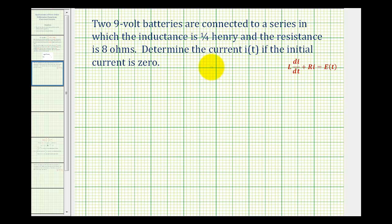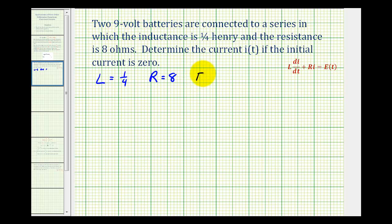From this problem, we need to recognize that L is one-fourth Henry, so L is equal to one-fourth. The resistance is eight ohms, so R is equal to eight. And because we have two nine-volt batteries, two times nine volts is eighteen volts, so e of t is equal to eighteen.